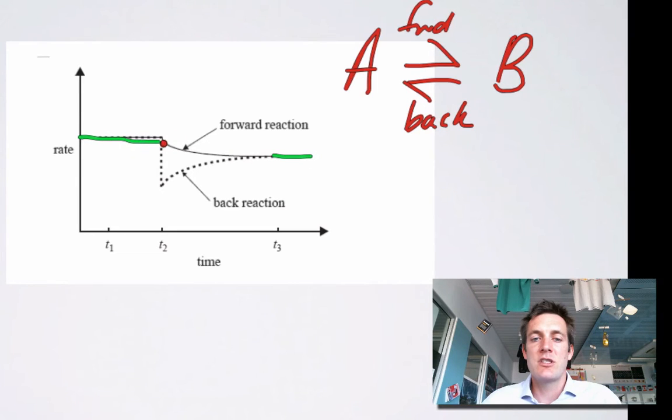So flat sections here where the two rates are the same are clearly referring to a system at equilibrium. It's in this balanced state; it's got all the characteristics of a system at equilibrium. I'm just shortening that to EQM.